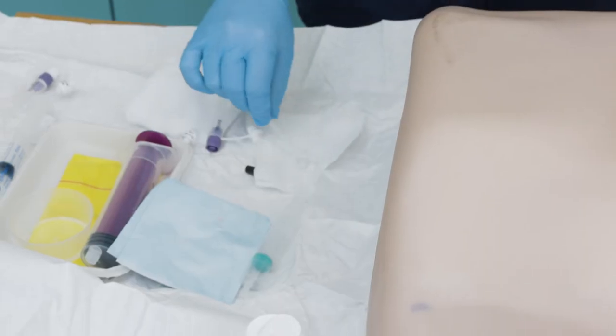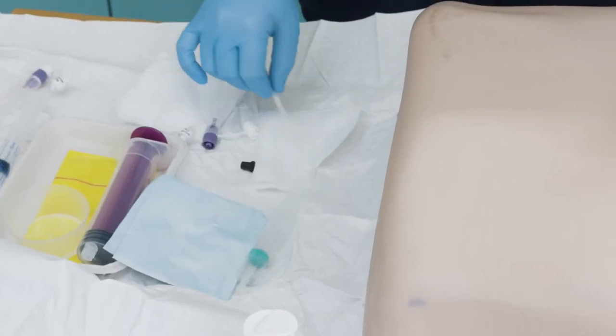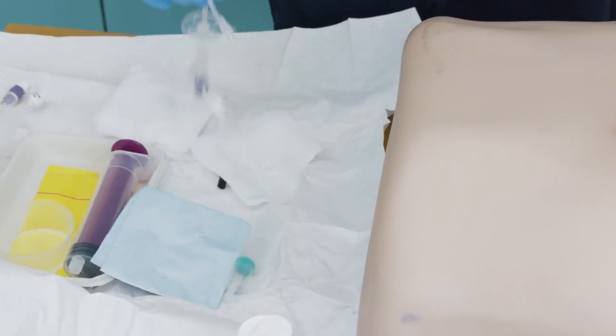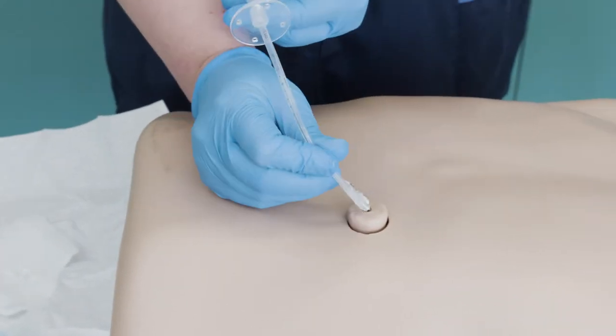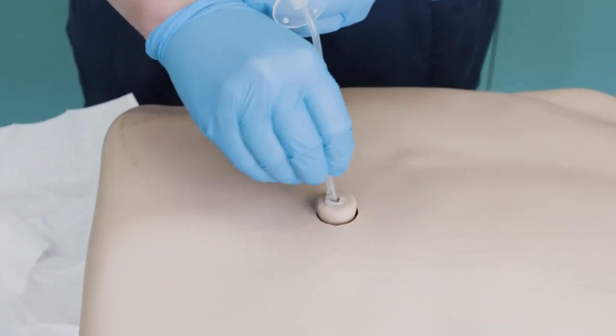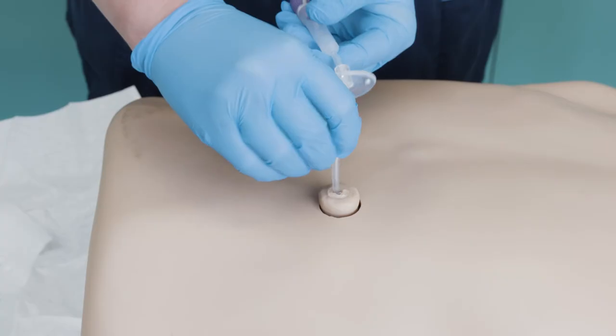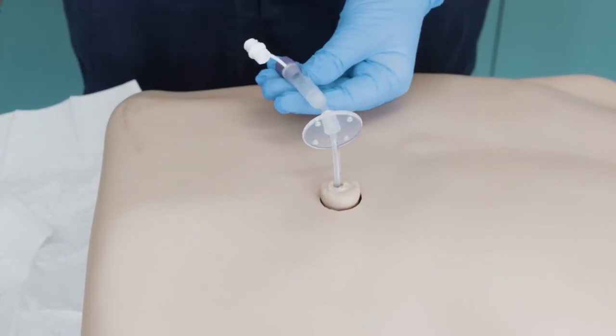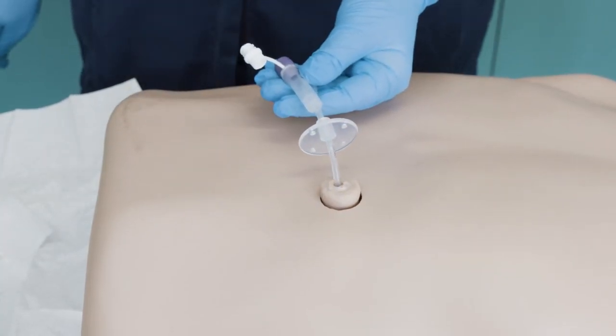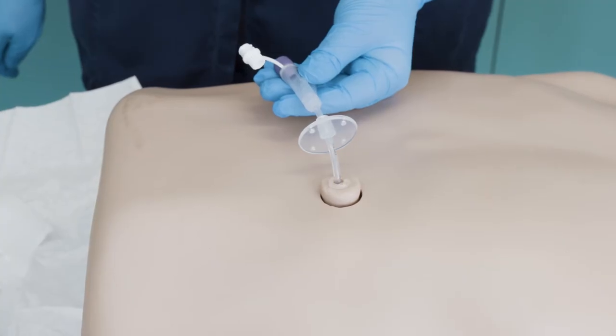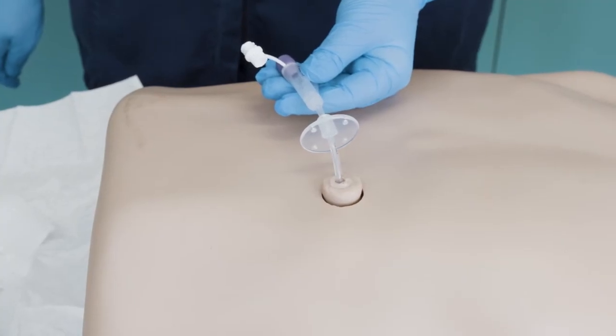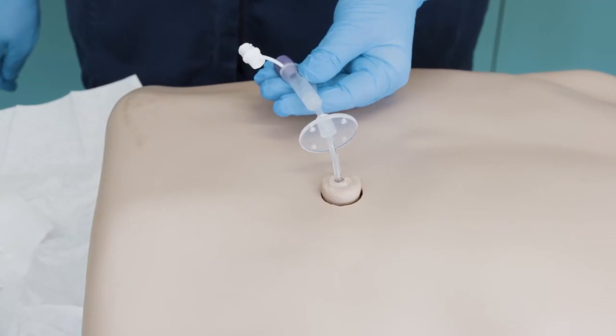Lubricate the end of the new tube with a small amount of lubricating jelly and insert the tube into the stoma site. Please note: if any unexpected resistance is felt or patient experiences acute pain, then please stop the procedure and contact the enteral nutrition nurse team or children's community nursing team for advice.